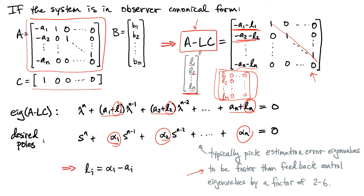When picking poles, remember that their location determines the speed of response. If we want our estimate to be close to our state so that we can use estimate-based feedback — feeding back u = K times x-hat instead of u = K times x — we'd like x-hat to converge to x rather quickly, possibly faster than we use for control. For that reason, when designing both K and L, we typically pick poles that are faster for the estimator so that our estimate converges more quickly than we inject our control.